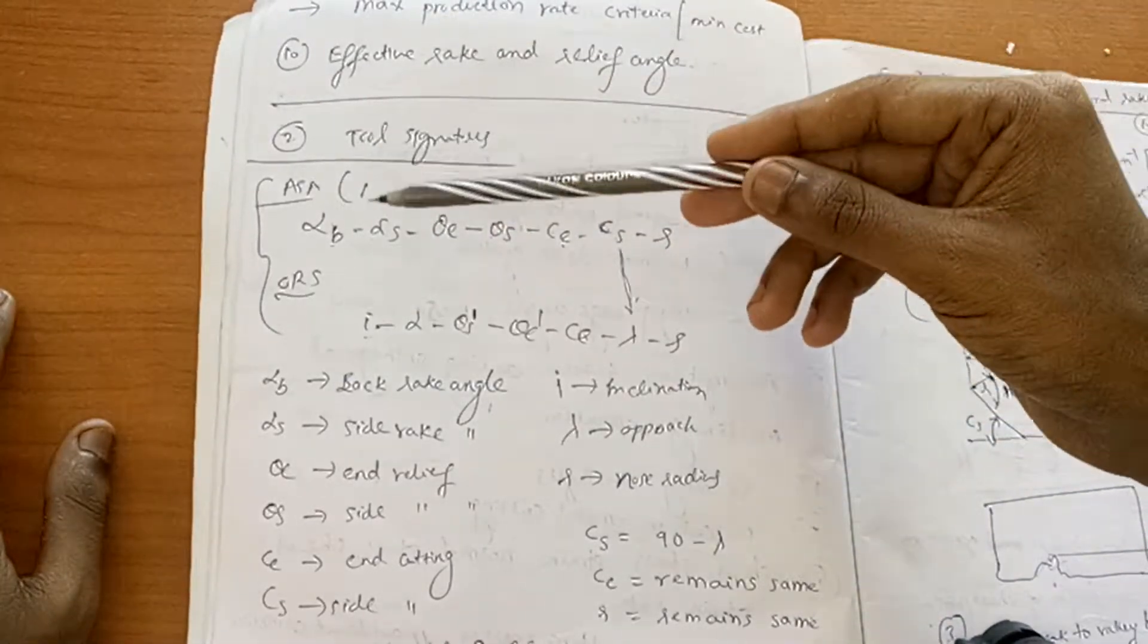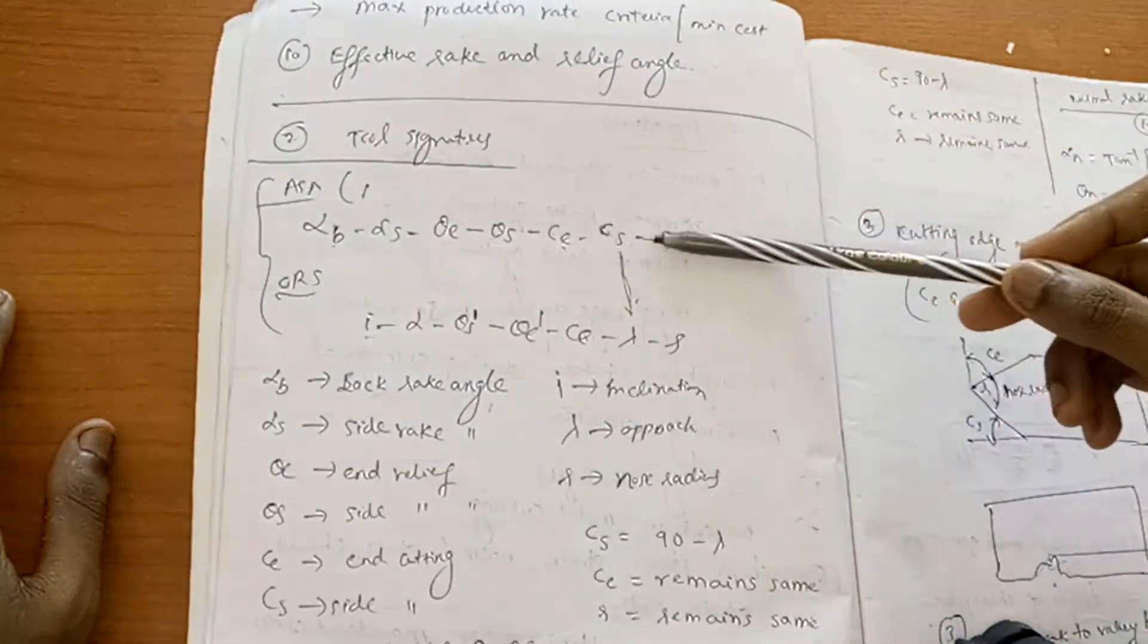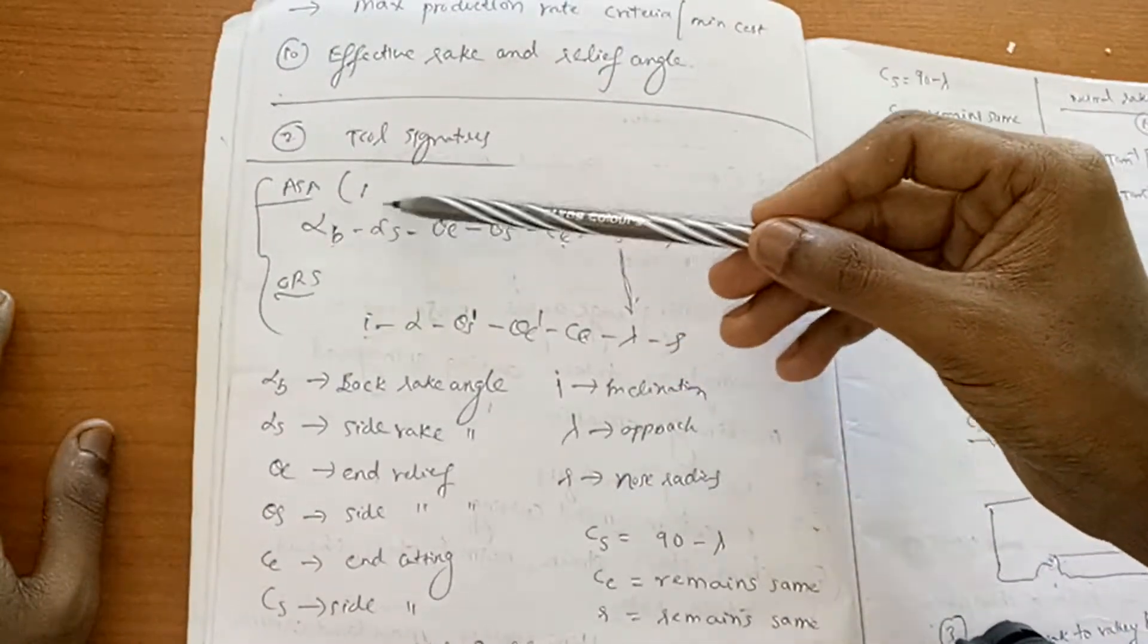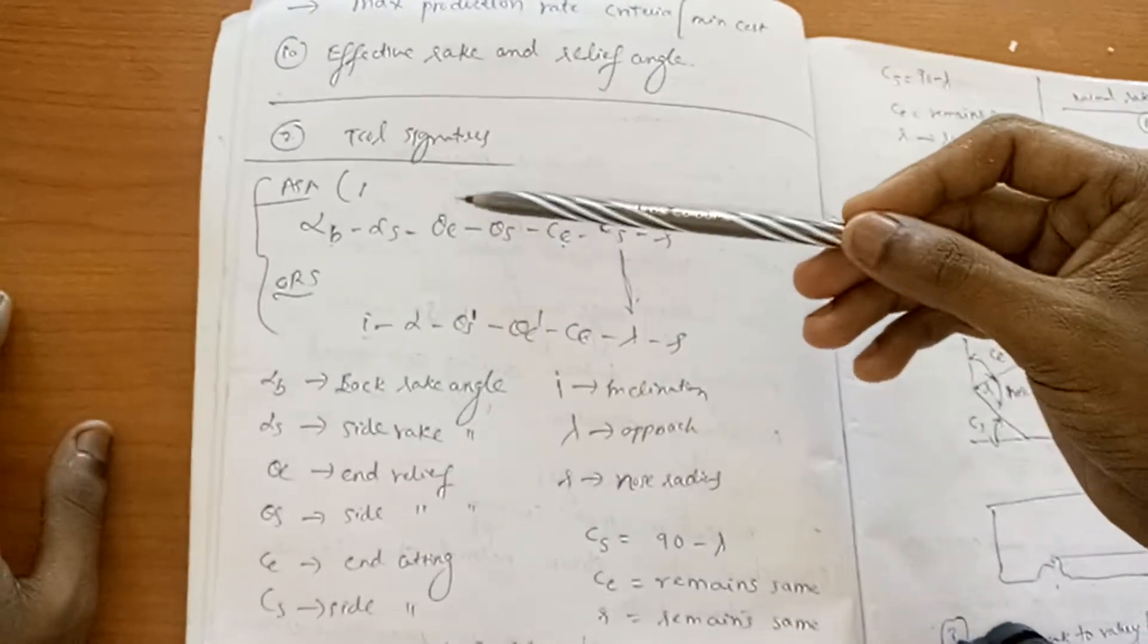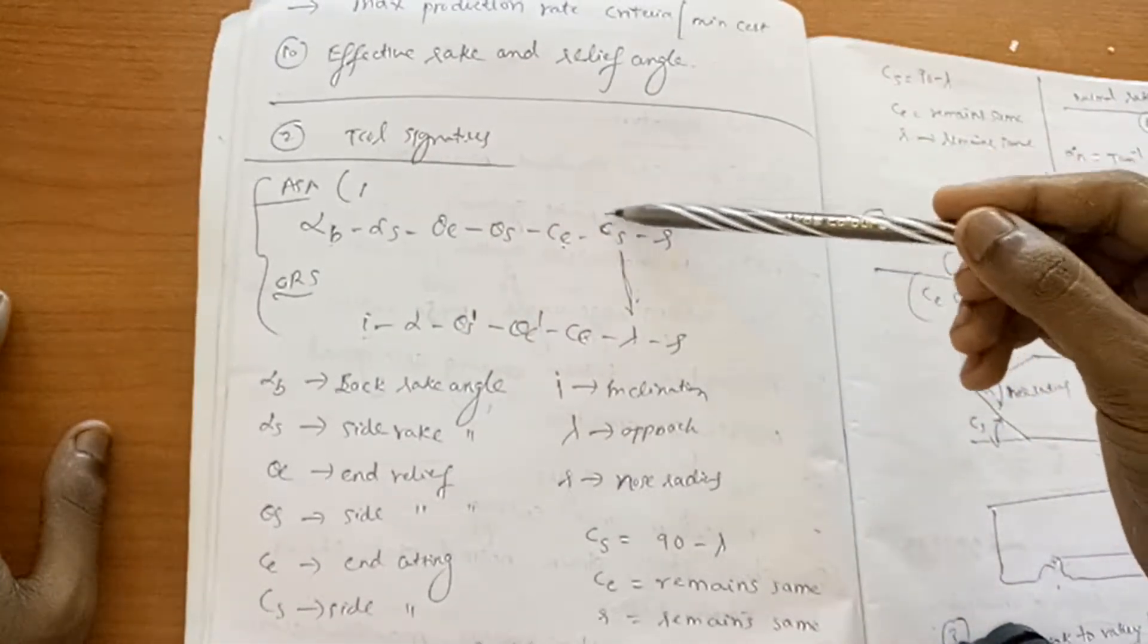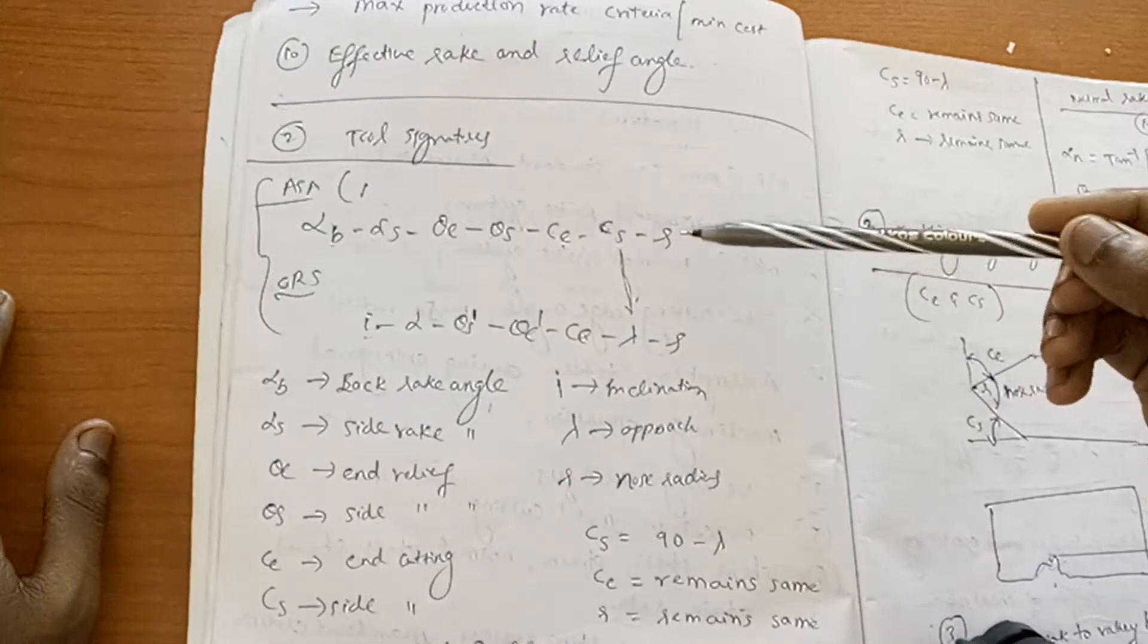So coming to American Standard System, this is the sequence for those angles. First one is back rake angle, side rake angle, effective end relief angle, side relief angle, side cutting edge angle, or nose radius.